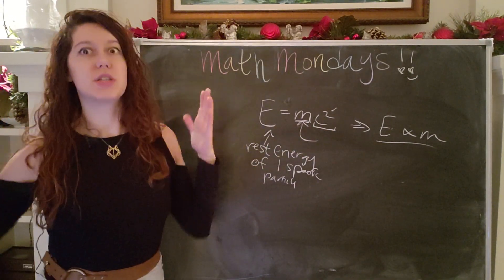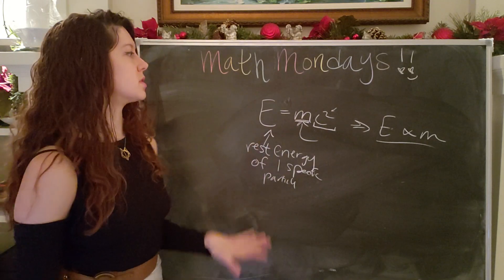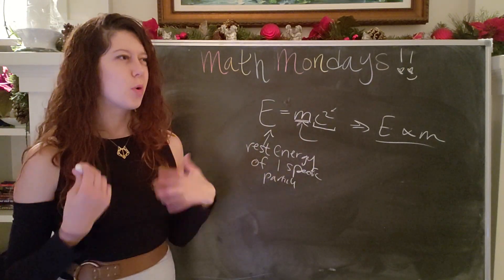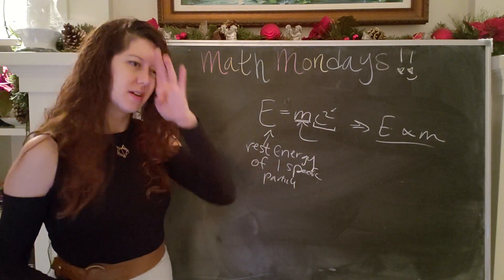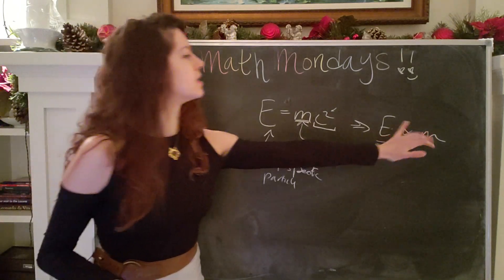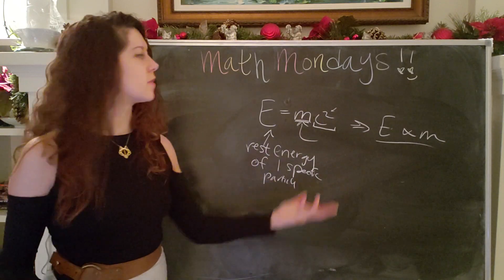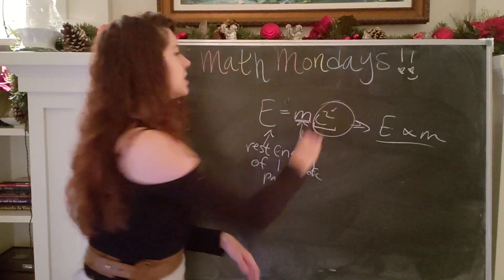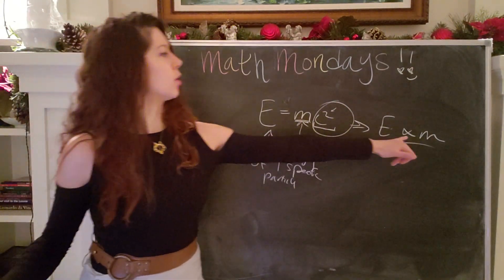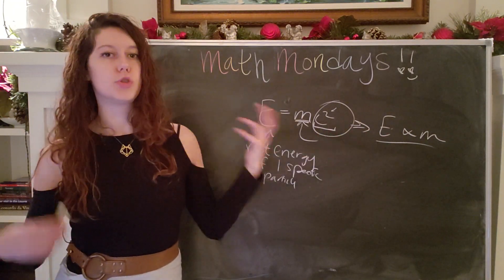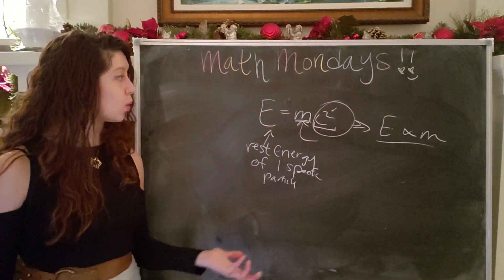So context is super, super, super important. And like I mentioned, no particle is really at rest. But the importance of this is to tell us that energy and mass are different forms of the same thing. And the constant that is our proportionality constant is equal to the speed of light squared.